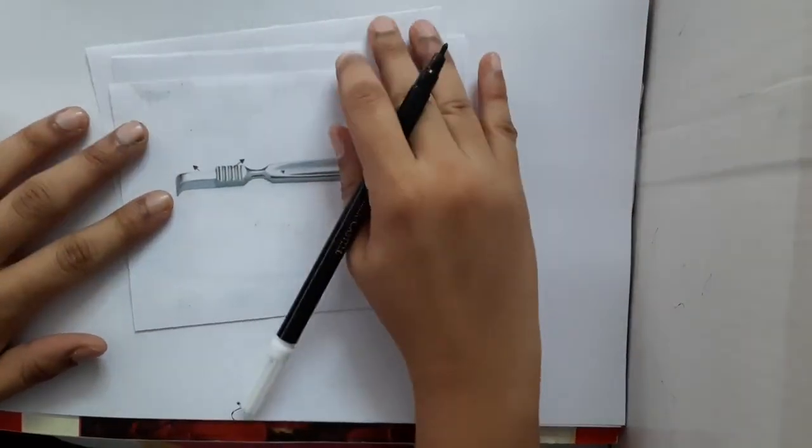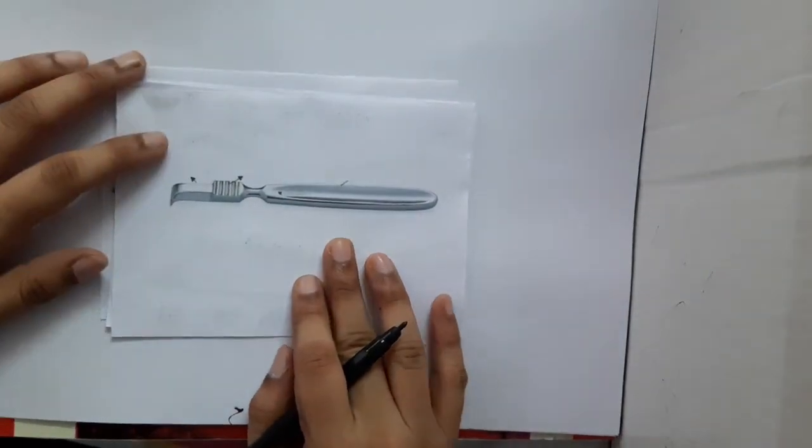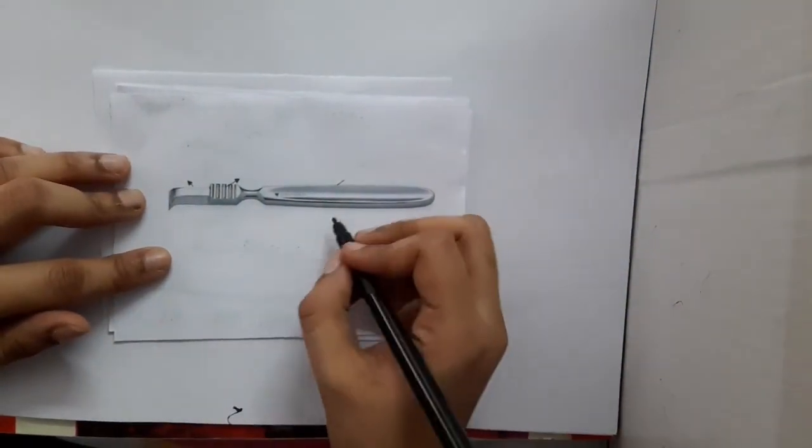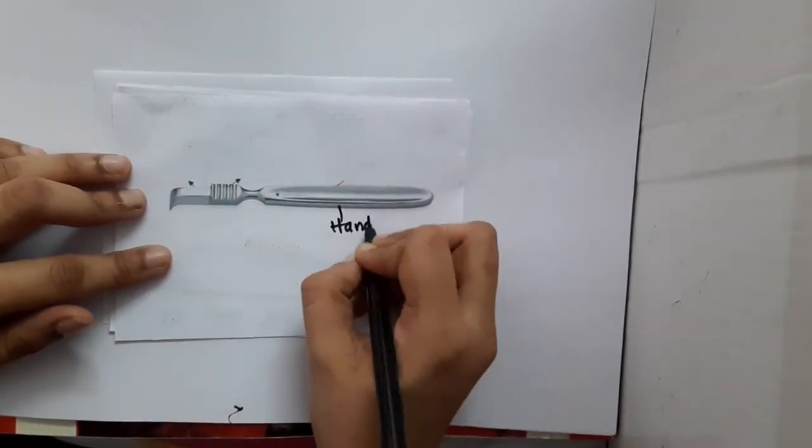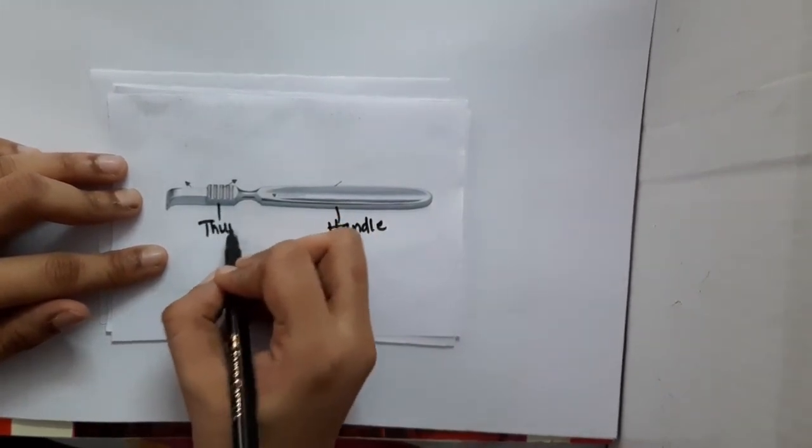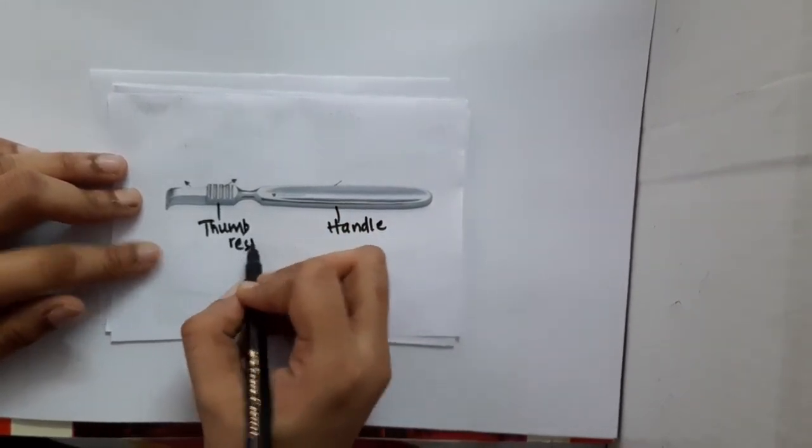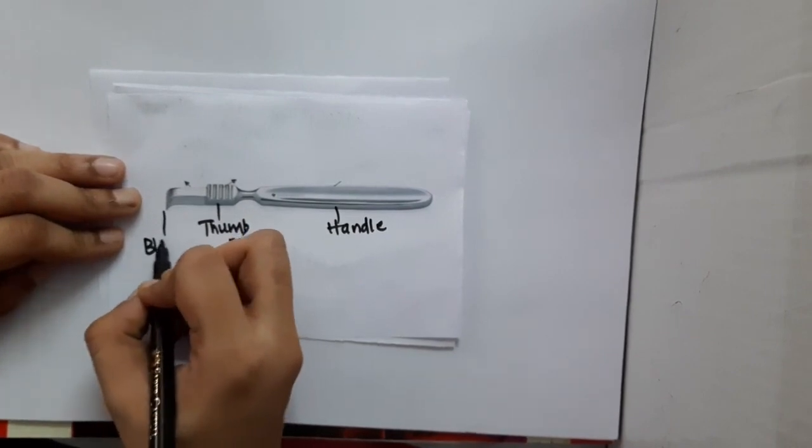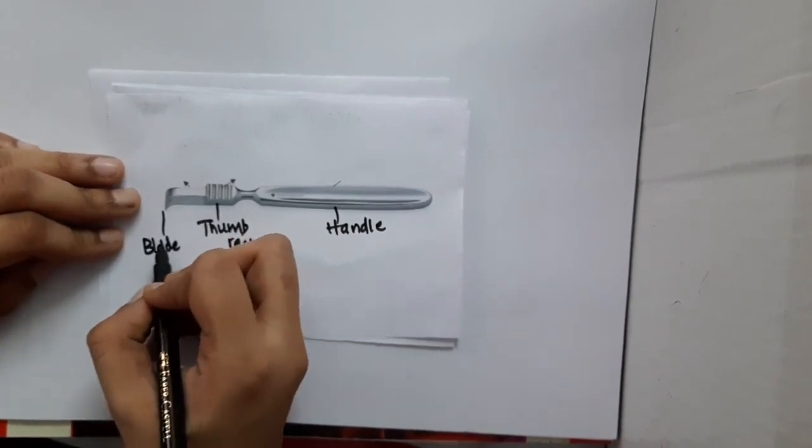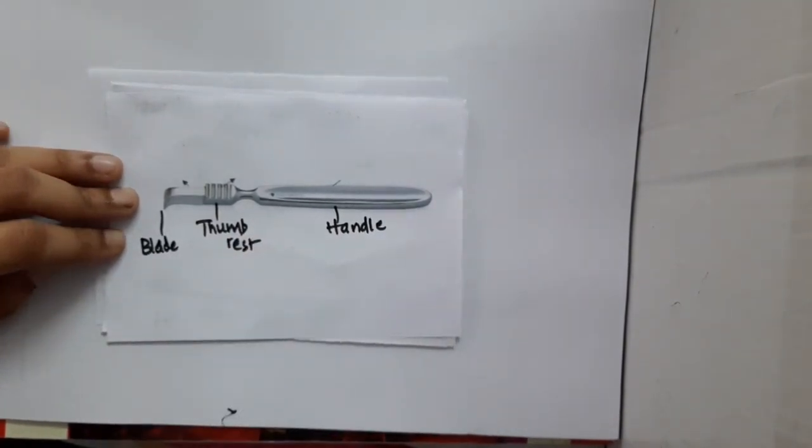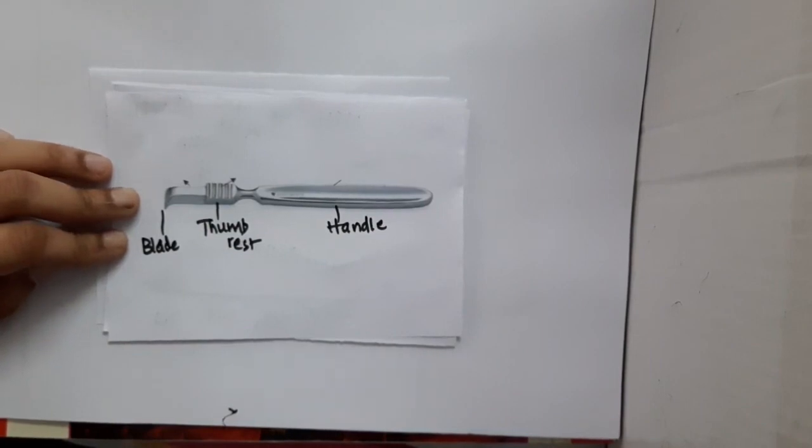See what does this have? This has a handle, this has a thumb rest, and then it has a blade. It has a handle, thumb rest, and blade.